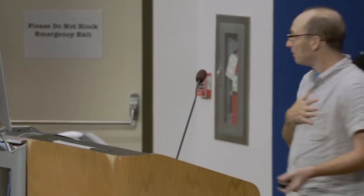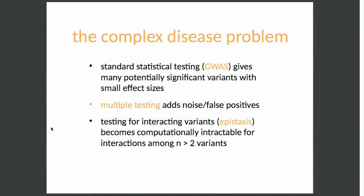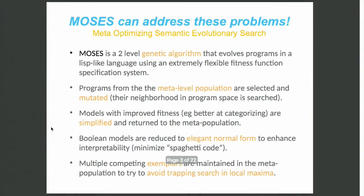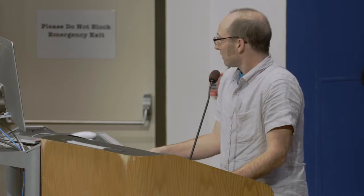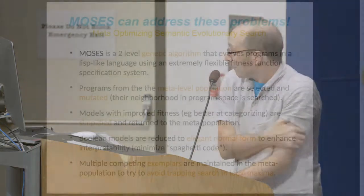So this is probably not new to any of you. The machine learning problem is: how do you work with data with lots and lots of features and not very many samples? So instead of applying straightforward statistical analysis, you can apply an evolutionary genetic algorithm.